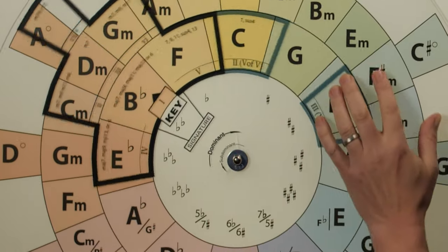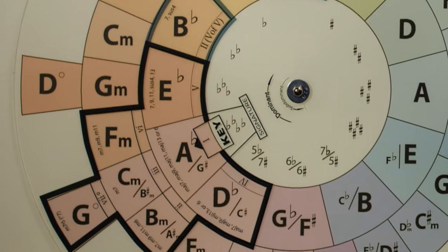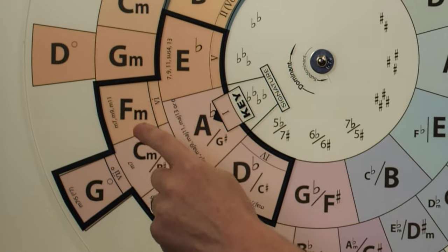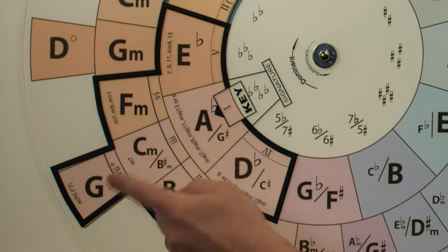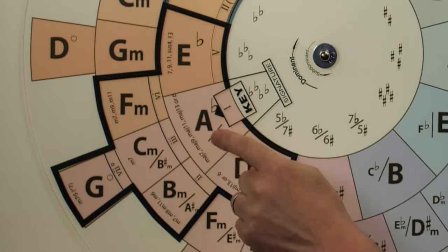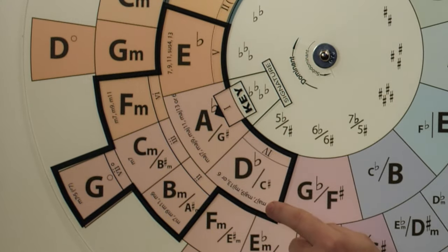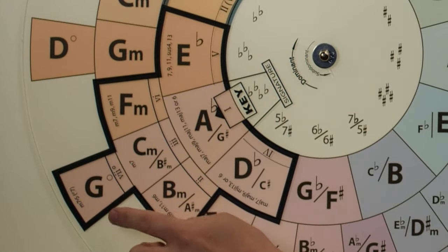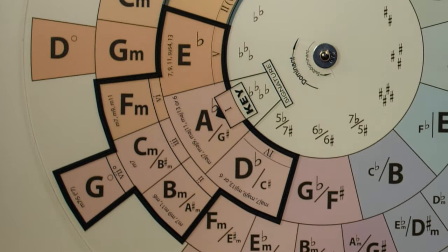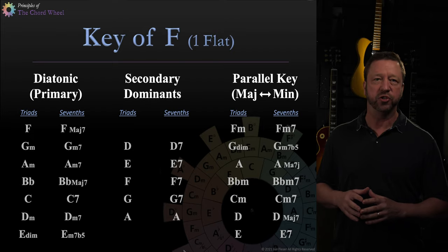So then we have our rotate three over. And here are our borrowed chords. F minor seventh, C minor minor seventh, B minor minor seventh, E flat, E flat dominant seventh, A flat, A flat major seventh, D flat, D flat major seventh, and the G diminished or G minor seven flat five. I think you can see why the chord wheel is the number one selling music reference title of the 21st century.